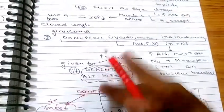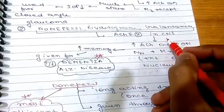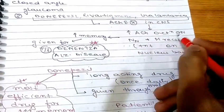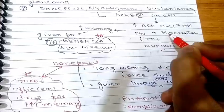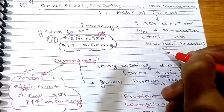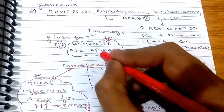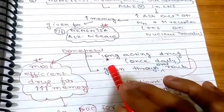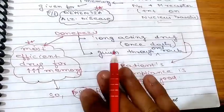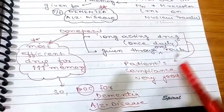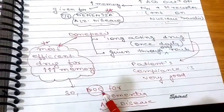The next group of tertiary drugs includes donepezil, rivastigmine, and galantamine. They also inhibit acetylcholinesterase in the CNS, increasing acetylcholine action on NN and M receptors — mainly present on the nucleus basalis. Since the nucleus basalis has both N and M receptors, increased acetylcholine action on M receptors of the nucleus basalis leads to increased memory. So these drugs are given for dementia and Alzheimer's disease. Donepezil is a long-acting drug among these, given once daily through the oral route, so patient compliance is good. It is the most efficient drug for increasing memory and is the drug of choice for dementia and Alzheimer's disease.